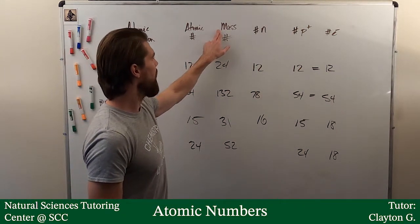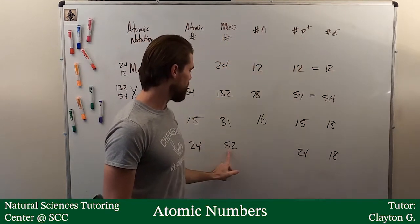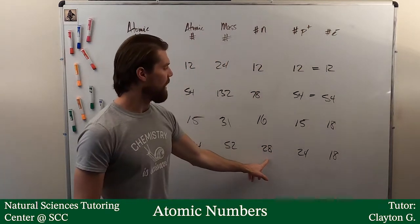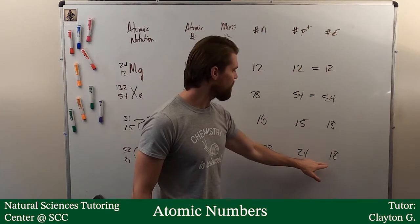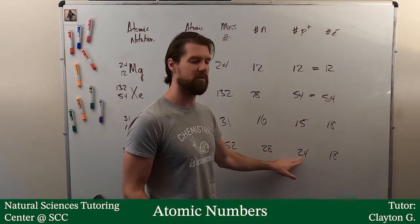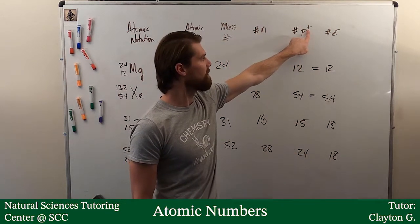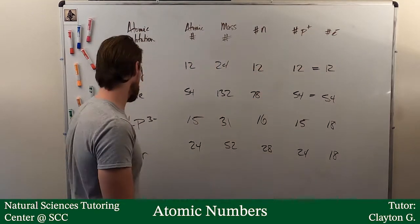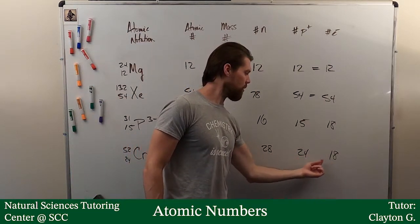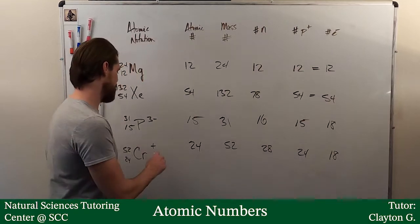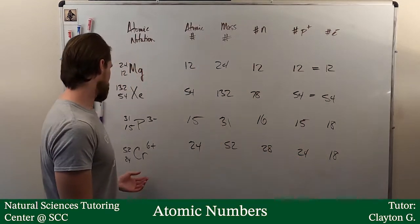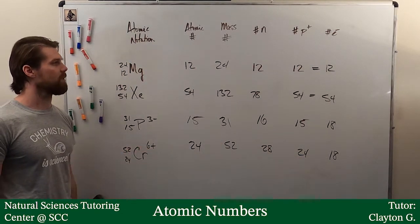Once again, I know the mass is the neutrons plus the protons, so 52 minus 24 gives me 28. And this is interesting here, I have six less electrons than I have protons. I have more positive particles than negative particles, so I know this is going to be a plus charge. How many more particles? Six. So this would be a six plus. I have six more protons than I have electrons. Chromium is 52 with a six plus charge on it.